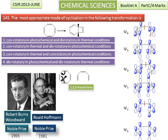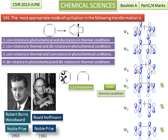For 1,3,5-hexatriene having a 4N+2 system with 6 pi electrons, these electrons are occupied in Ψ1, Ψ2, and Ψ3 molecular orbitals. So Ψ3 is called the HOMO — highest occupied molecular orbital — in thermal conditions. Ψ4 is called the LUMO, the lowest unoccupied molecular orbital.